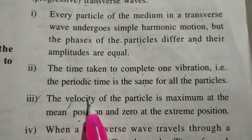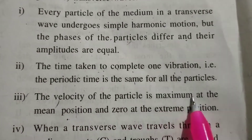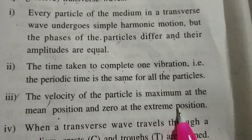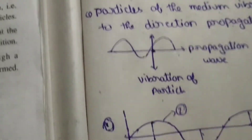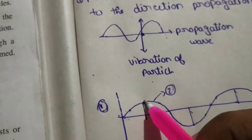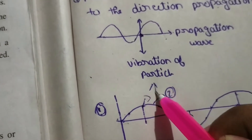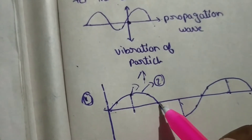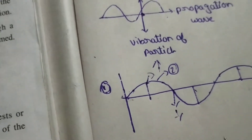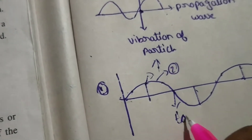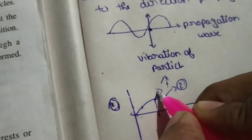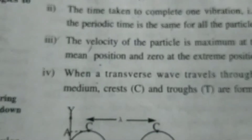The velocity of a particle is maximum at the mean position and zero at the extreme position. The velocity is maximum at the mean position, and the displacement is maximum at the extreme position.